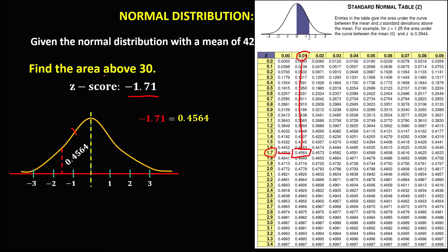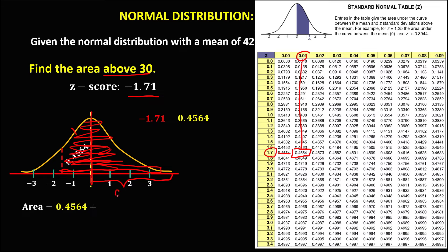Since we're looking for the area above — to the right — this is the unknown area above 30, or above negative 1.71. The area is within the mean, so we add the two areas: 0.4564 plus 0.5, since half the curve has area 0.5. The total area is 0.9564, or 95.64%.